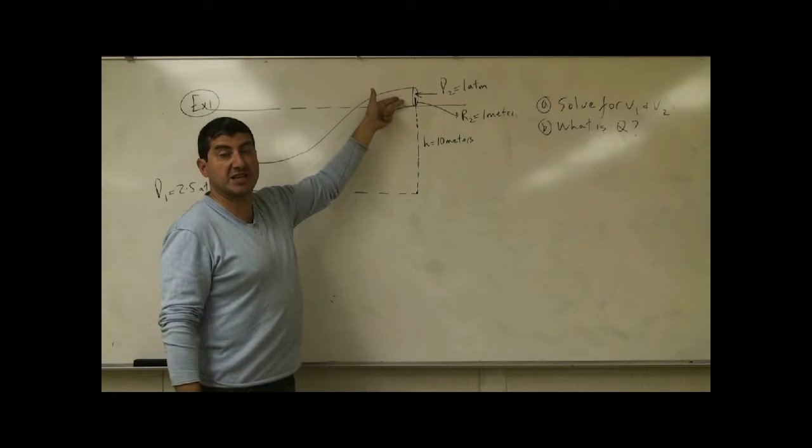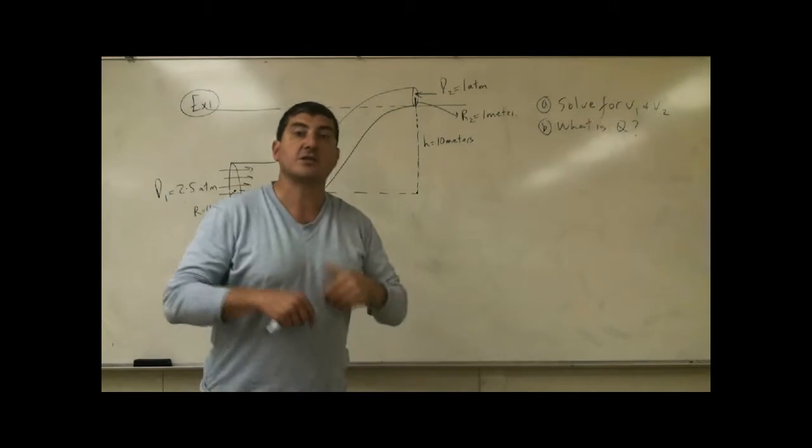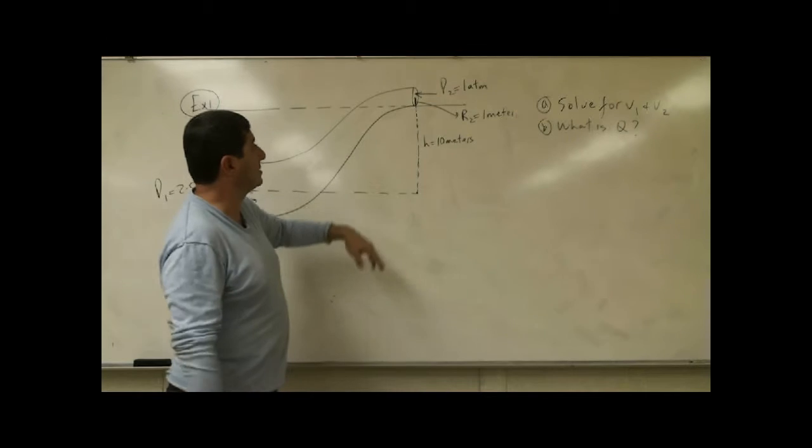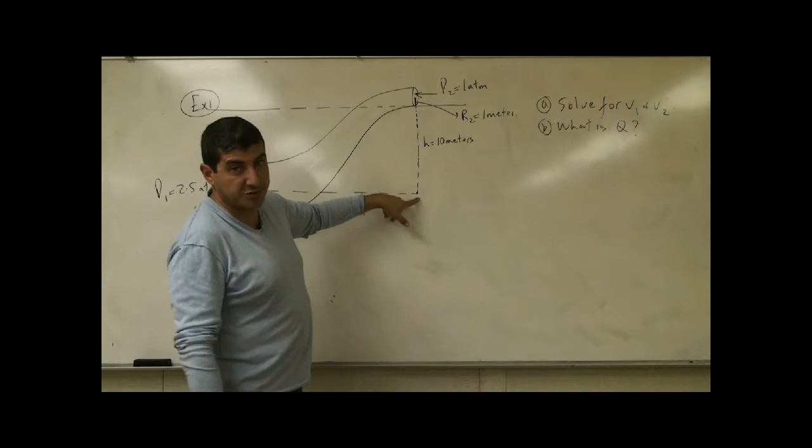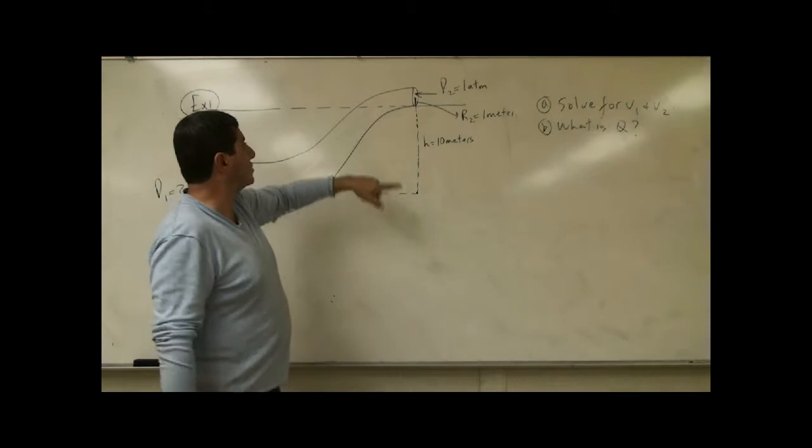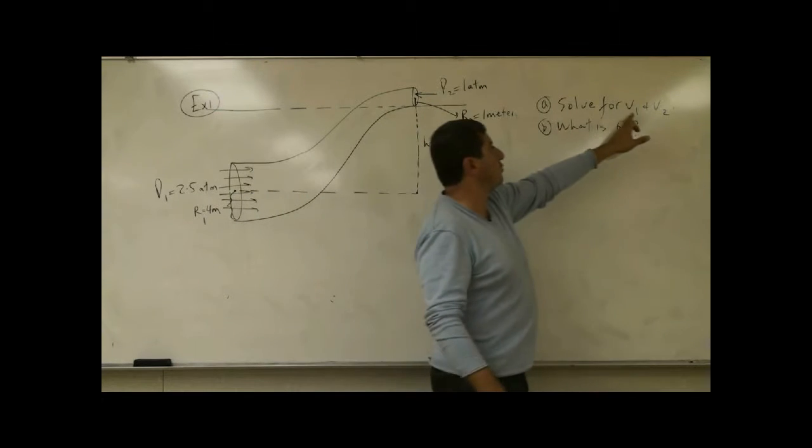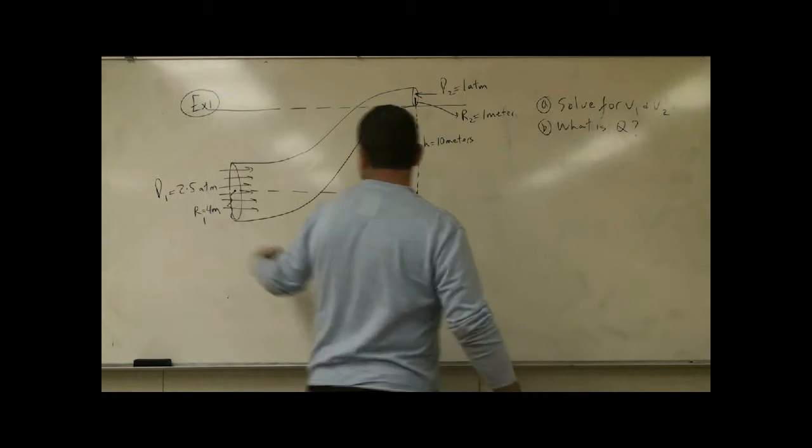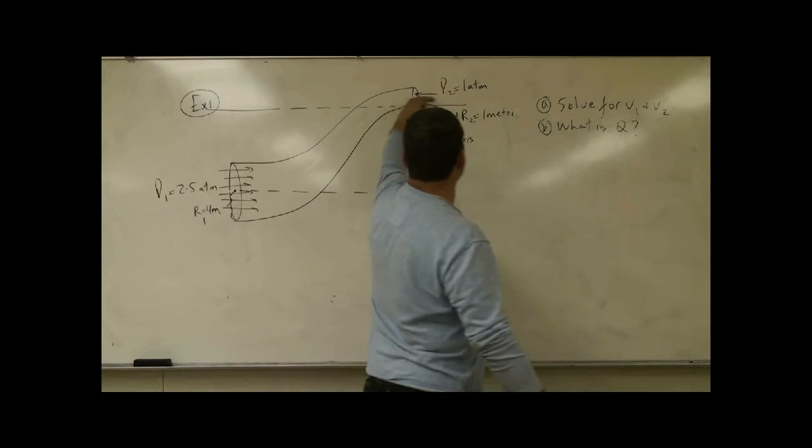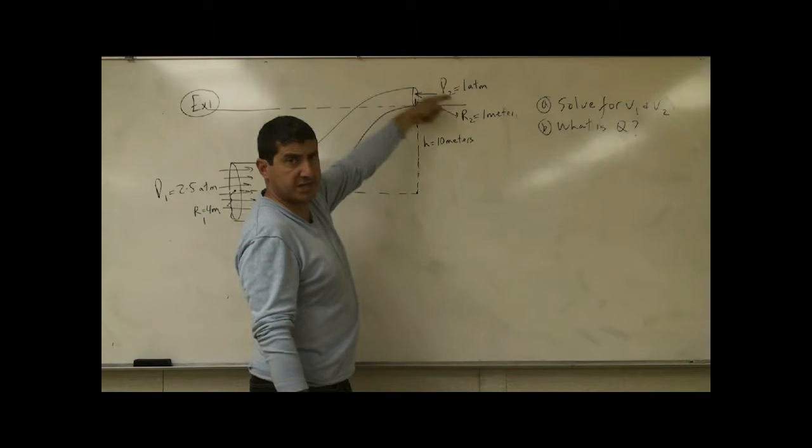As it's going up, the tube is getting constricted, so as we saw from the volume flow rate, the velocity is going to increase. Velocity is going to increase, but it's also going to decrease because its potential energy is increasing. So it tends to decrease. So what we want to do is we want to find out, the problem says, what's the incoming velocity V1 and what is the outgoing velocity V2? With what velocity will the water be coming out over here?